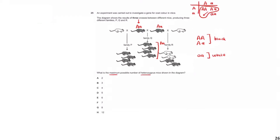We know the white mouse is therefore recessive, so it must be aa. The offspring in family Q are all black. We know for certain that all of them are going to be Aa, because they definitely inherited a small a from the white mouse, and to be black they must have Aa or AA. AA is no longer possible since they must carry a small a from the white parent, so all these mice are Aa.